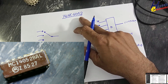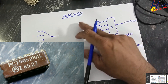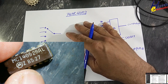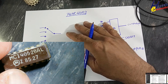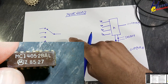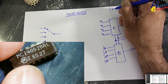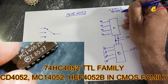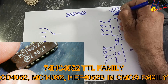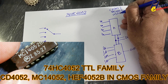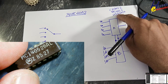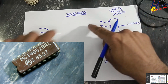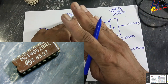I have the MC14052 which is in the CMOS family — same function, same pin-out, everything the same, just a voltage level difference. I will test this IC at TTL level. The CD4052 and MC4052 need 3 volt to 15 volt power supply, but the 74HC4052 will need 5 volt.